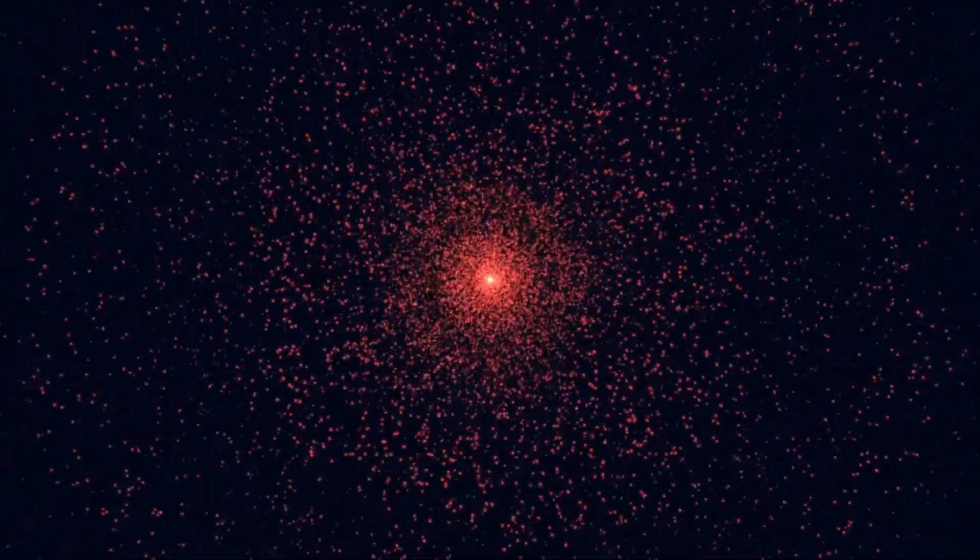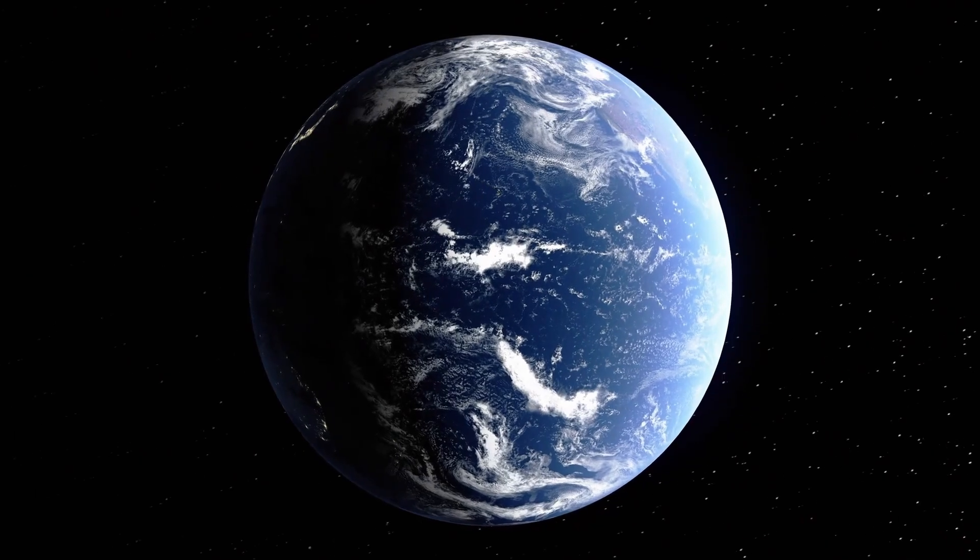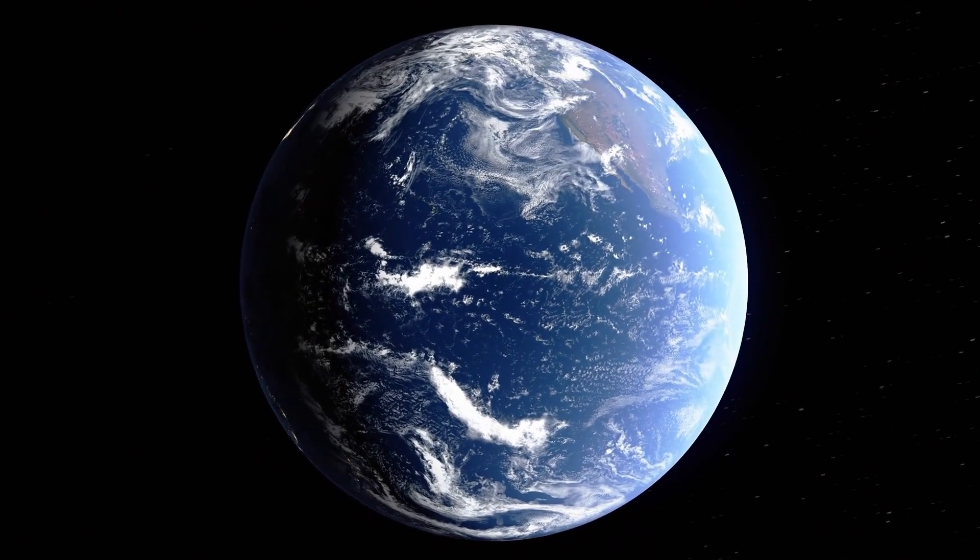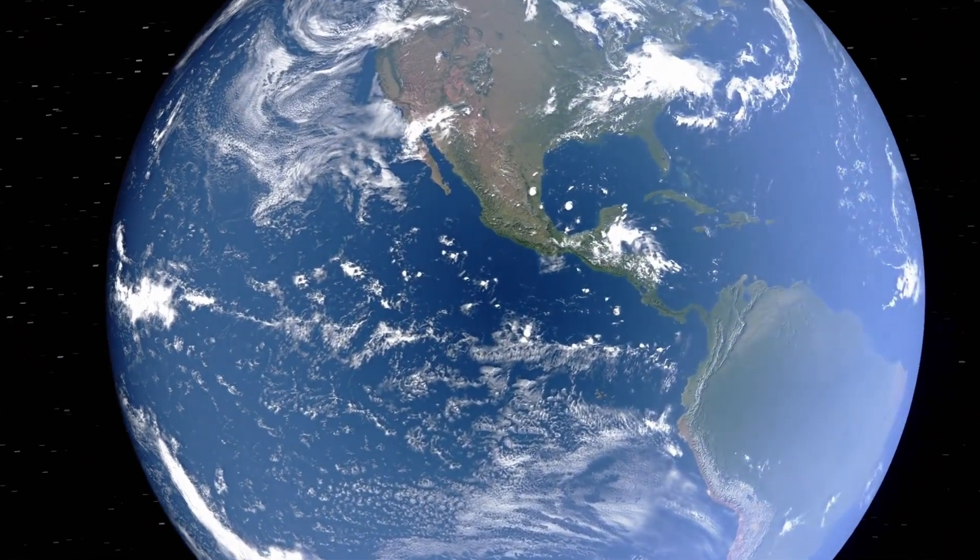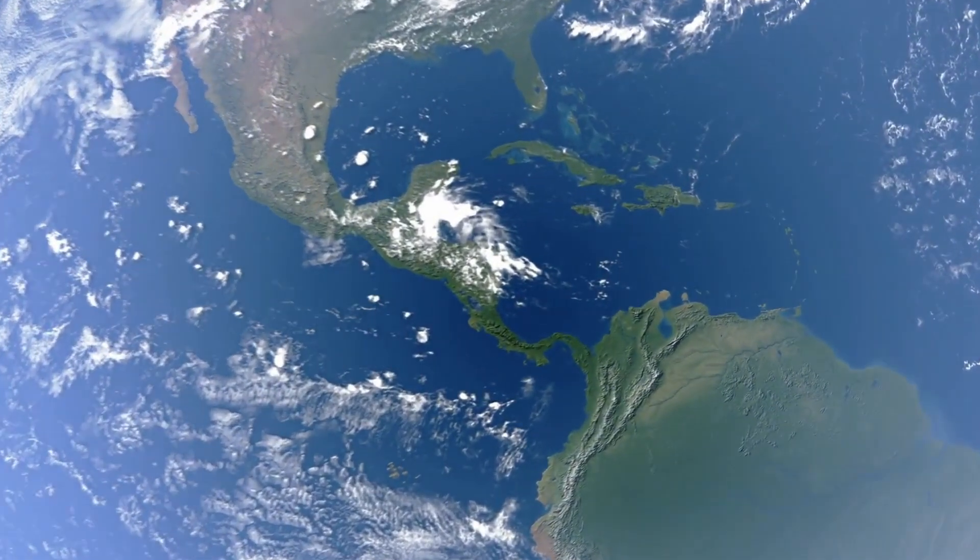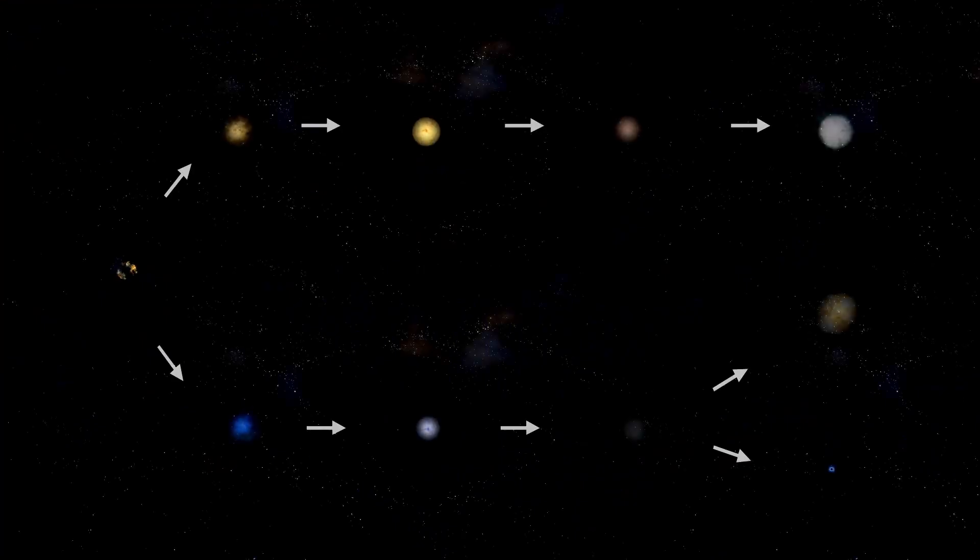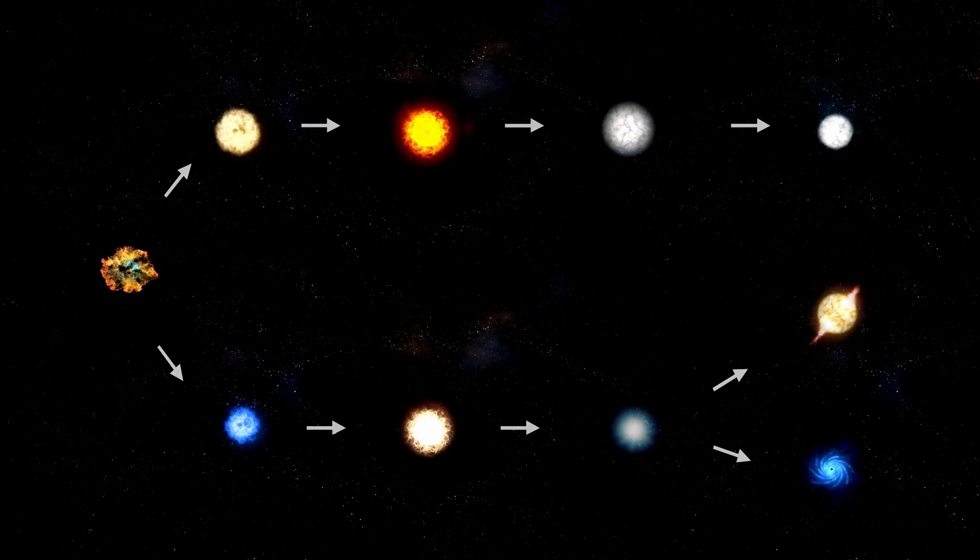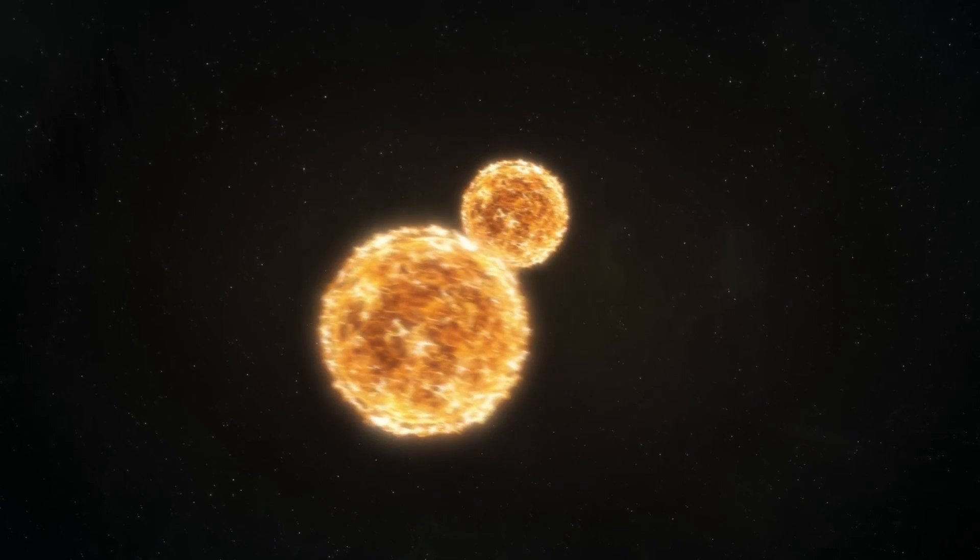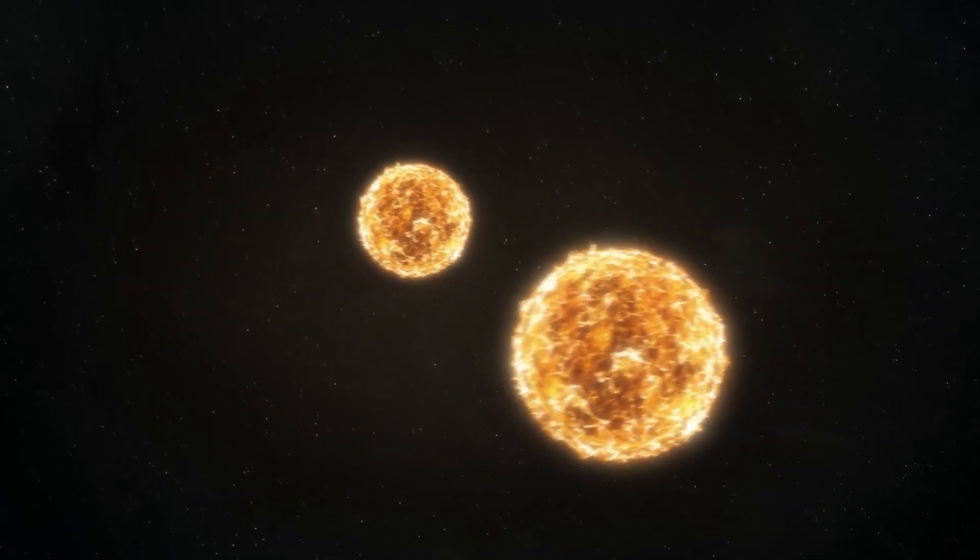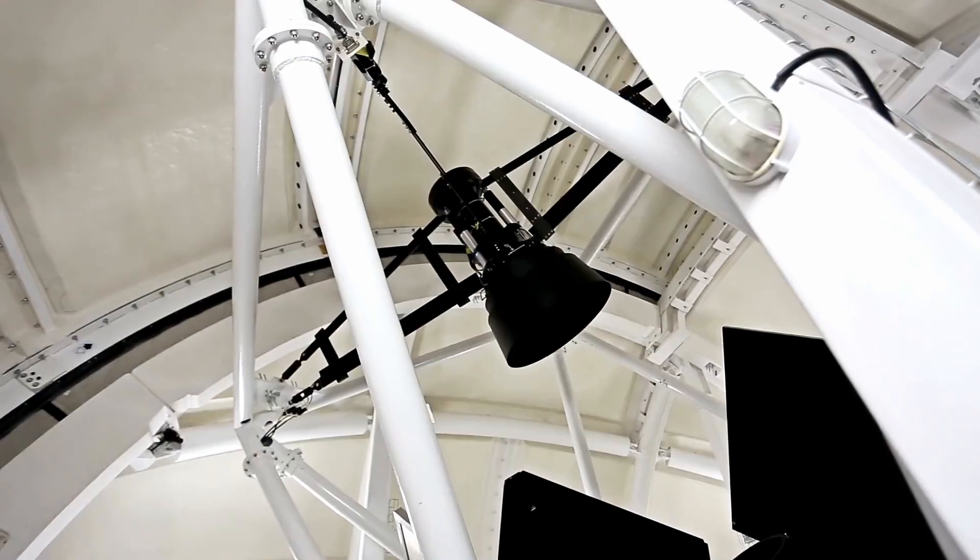This supernova, discovered by amateur astronomer Koichi Itagaki, offered a unique opportunity to study a relatively close stellar explosion. Within days, it dramatically brightened before beginning a steady decline. Spectral analysis of SN2023 IXF revealed strong emission lines, indicating intense interaction between the explosion's shock wave and surrounding gas. The parent star is believed to have shed up to one solar mass of material in the final years of its life, indicating its end was highly turbulent, much like what might be occurring with Betelgeuse.